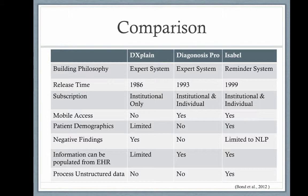DXplain allows very limited input of demographic information — only age, gender, and estimated duration of the disease — while DiagnosisPro doesn't allow that at all, and Isabel is the most flexible of the three. DXplain allows input of negative findings, such as 'no fever,' as supportive findings to help refute diseases. All three systems allow information populated from EHRs, though DXplain has very limited access. Isabel was the only program using a natural language processing search engine and allows unstructured data.